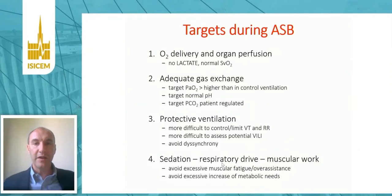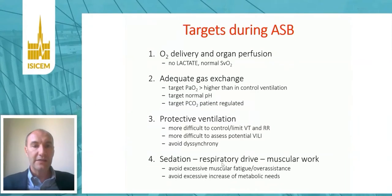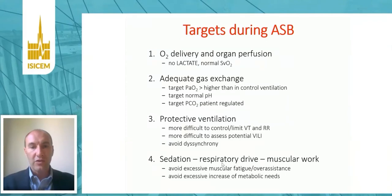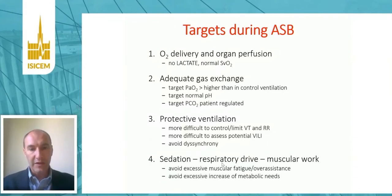During assisted spontaneous breathing modes of ventilation, we have to aim for certain targets. First, we aim for normal oxygen delivery and organ perfusion, so we have to monitor lactate and mixed venous or central venous saturation. We also aim for adequate gas exchange and, compared to controlled ventilation, we should target higher values of PaO2, lower values of PaCO2, and normal values of pH. It is more difficult to accept, for example, permissive hypercapnia during spontaneous breathing.